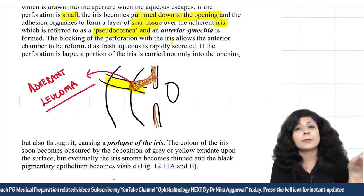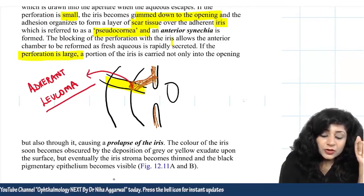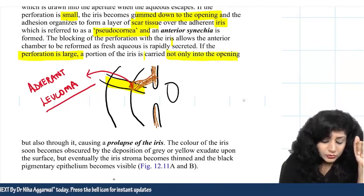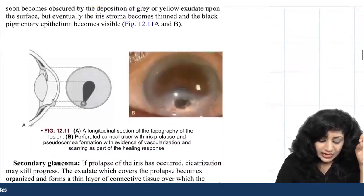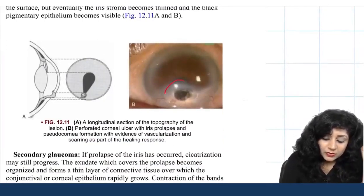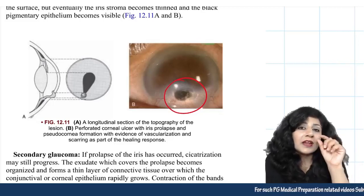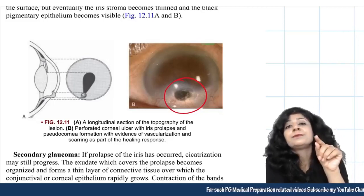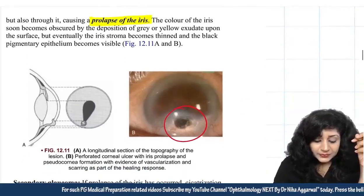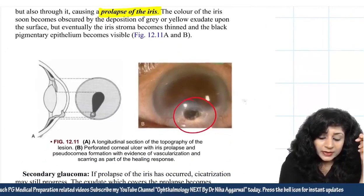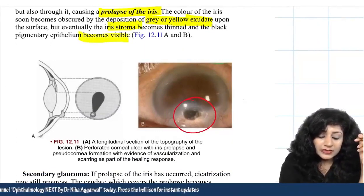If the perforation is large, the iris not only fills the opening but also comes out — this is prolapse of the iris. There is a key difference: adherent leucoma is when the iris seals the perforation from inside, while iris prolapse is when it comes out externally. The iris color becomes obscured by gray or yellow exudates, but eventually the iris stroma thins and the black pigmentary epithelium becomes visible.